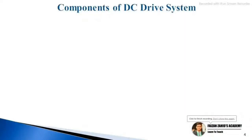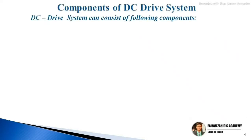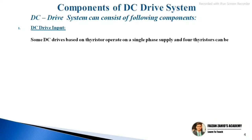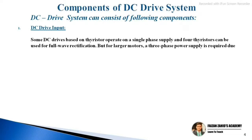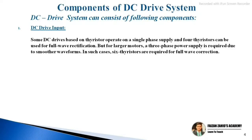Now let's look at the components of a DC drive system. The DC drive input: some DC drives based on thyristors operate on a single-phase supply, and four thyristors can be used for full-wave rectification. For large motors, a three-phase power supply is required due to smoother waveforms; in such cases, six thyristors are required for full-wave rectification.